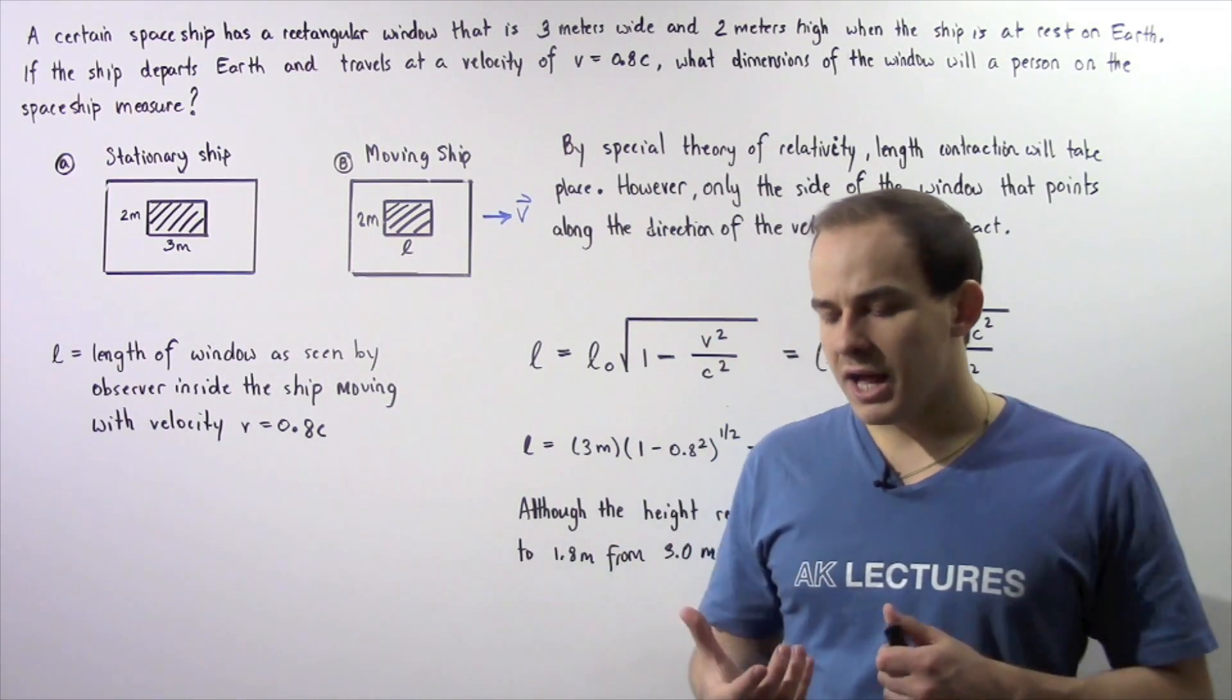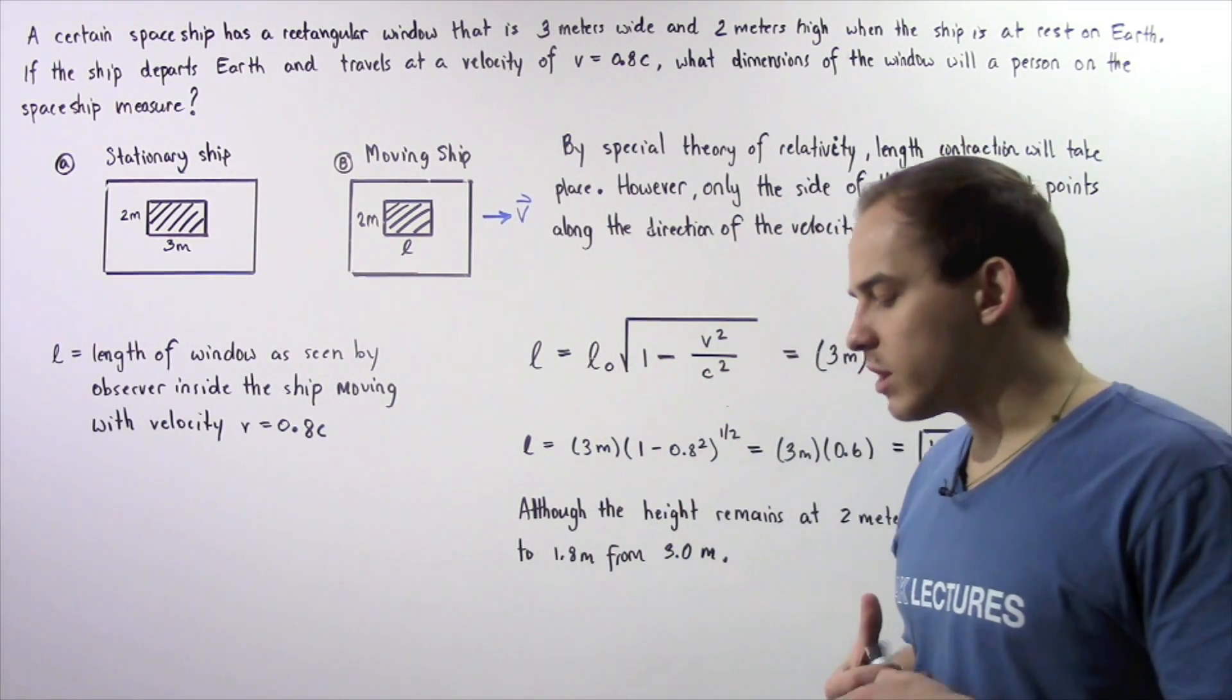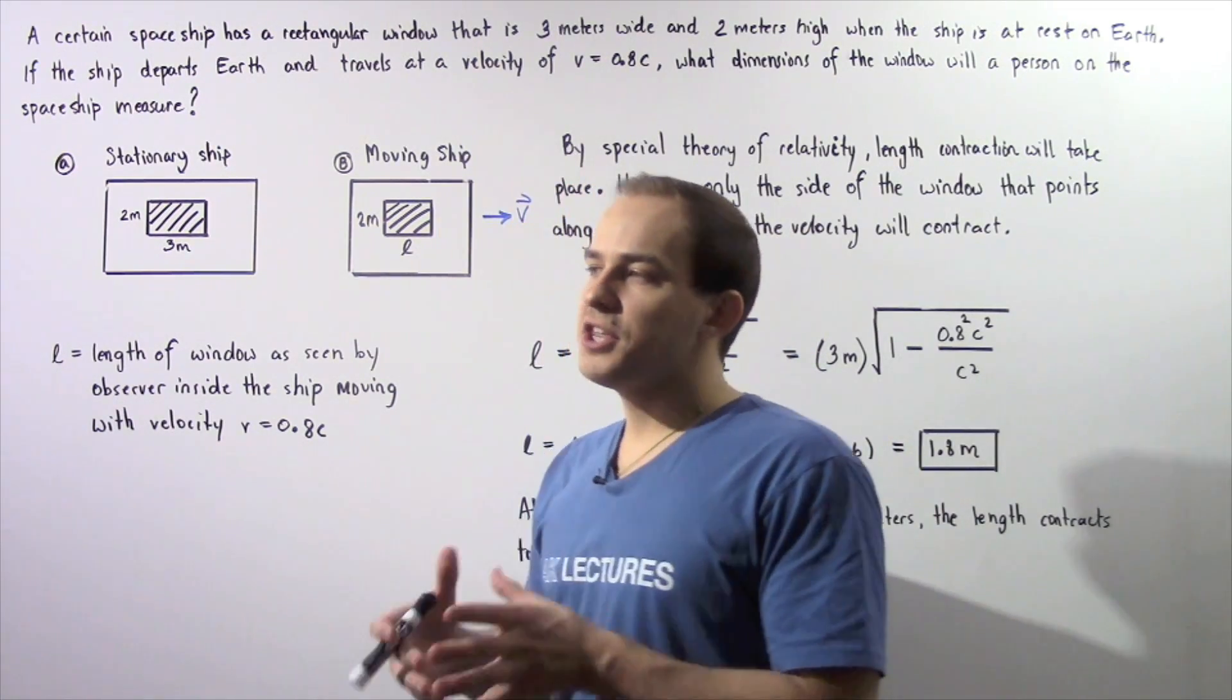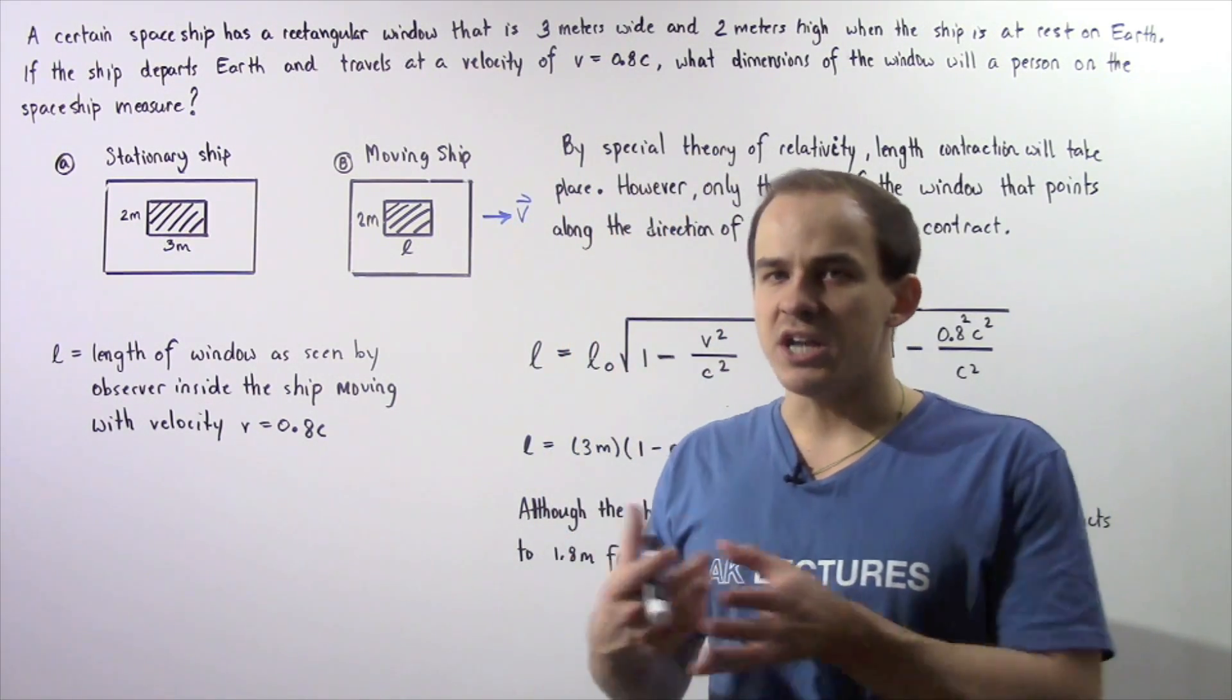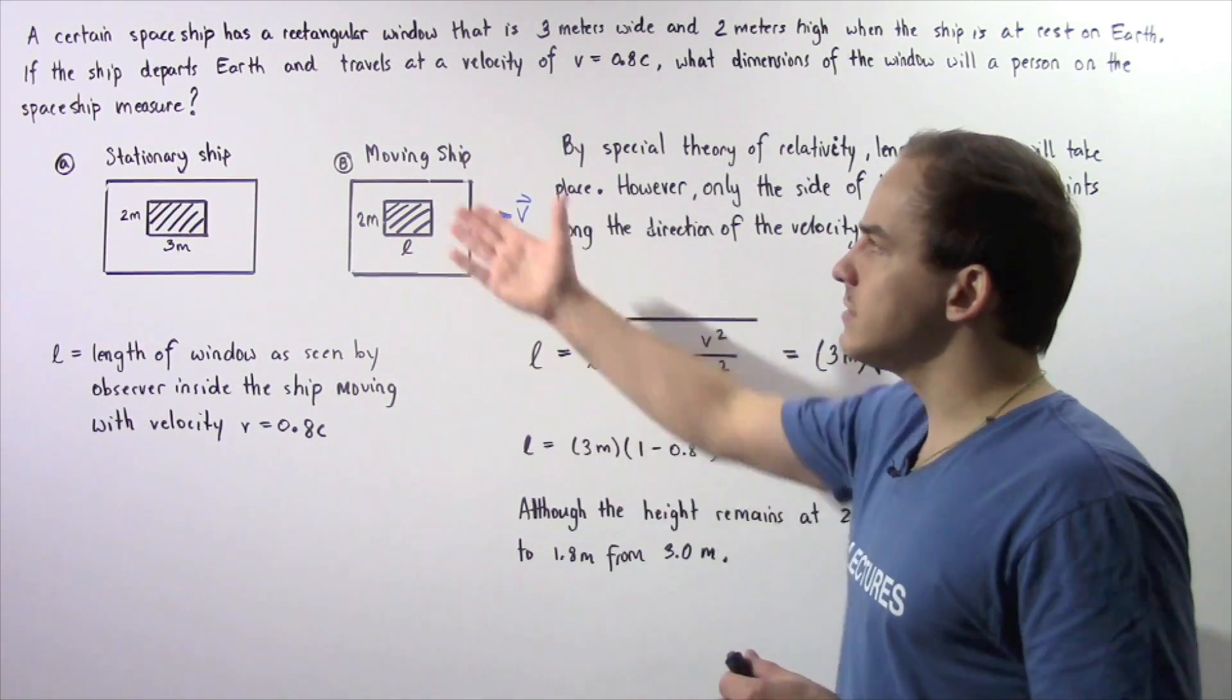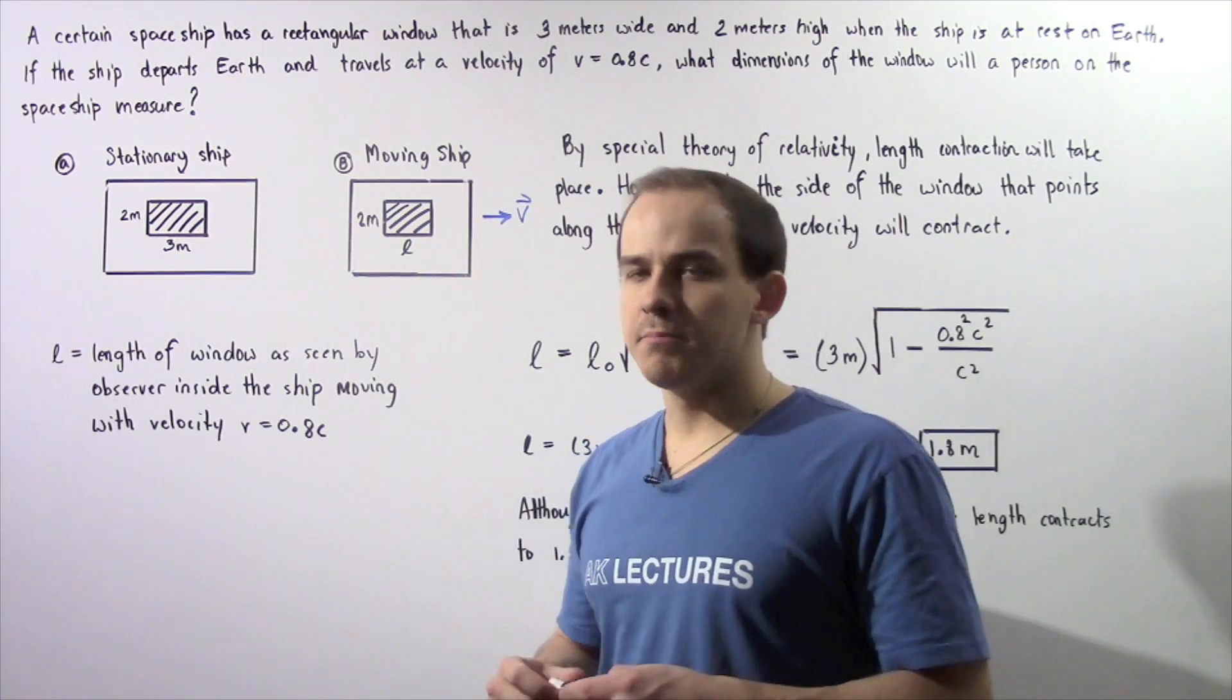In the previous lecture, we applied the special theory of relativity to length and distance. We said that length contraction takes place when an object moves with a very high velocity. Now let's apply that concept to the following example.